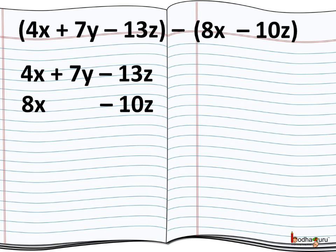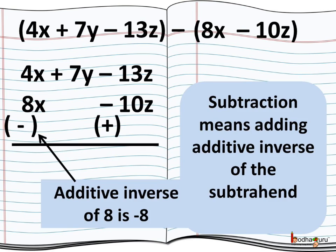So we have 4x plus 7y minus 13z and from it we need to subtract 8x minus 10z. So 8x will be written below 4x and minus 10z would be written below minus 13z. We also know subtracting integers means adding the additive inverse of the integer.